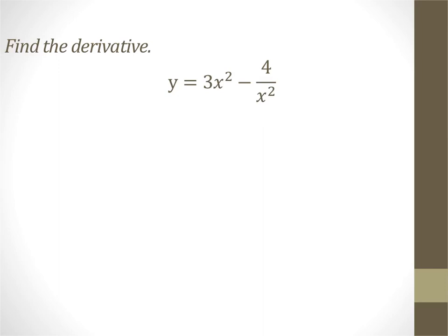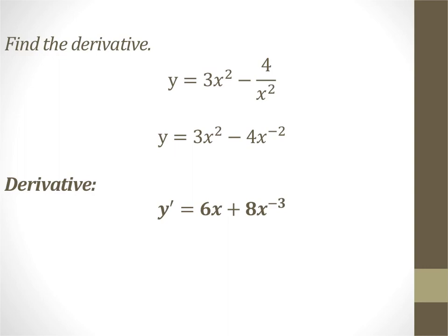Here's the first one. What you want to do with the second term is go ahead and change it so that it has a negative exponent on it. Then we use the power rule. The 2 comes down — 2 times 3 gives you 6 — so subtract 1 from the exponent to get x to the first power. Then the negative 2 comes down, you get positive 8x to the negative 3.